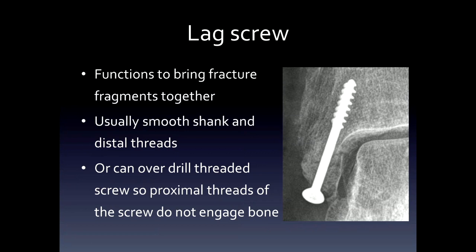These screws can be used as lag screws, which function to bring the fracture fragments together. Usually a lag screw is smooth in the shank and the distal threads are far apart — as you screw it in, the distal part engages the bone and forces the fracture fragments together against the screw head. If the screw is fully threaded, you can overdrill the proximal part so it doesn't engage the bone, and only the distal part will engage.